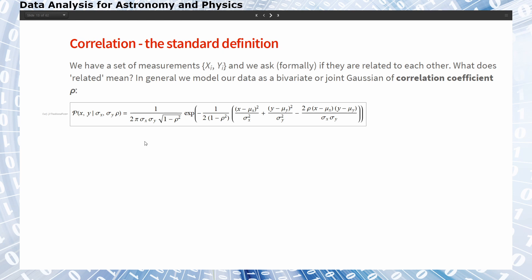Now to the standard definition of the correlation. Let's say you have a set of measurements of x and y values and we ask if they are related to each other. What this means is if we pick a high x value, does this mean that the y value that comes with it is also high, or is it low, or does the x value have no correlation or association to the y value?